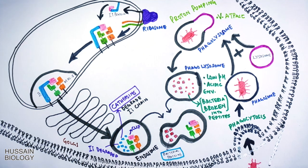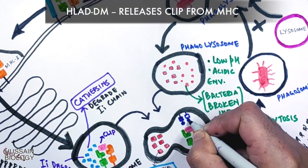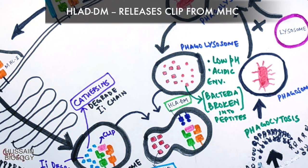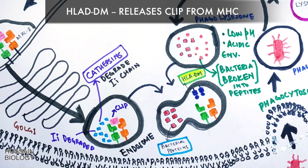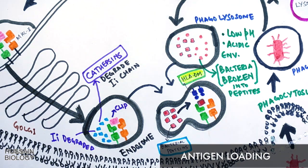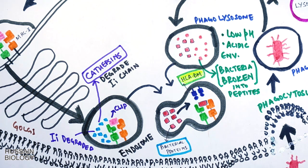So for this the phagolysosome has its own chaperone molecules by the name of HLA-DM. The HLA-DM is a chaperone molecule within the lysosomes and it removes the CLIP molecule from MHC-II groove and exposes the binding site of MHC-II molecule as shown in the diagram. Now the antigen is loaded onto the MHC-II groove.